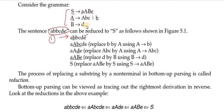The input string is a b b c d e. We start from left to right. First we look at 'a' — it is the start symbol so we leave it. Then we see small 'b' — 'b' is the right hand side of the production A → b. So we replace this 'b' with capital A using the production A → b.